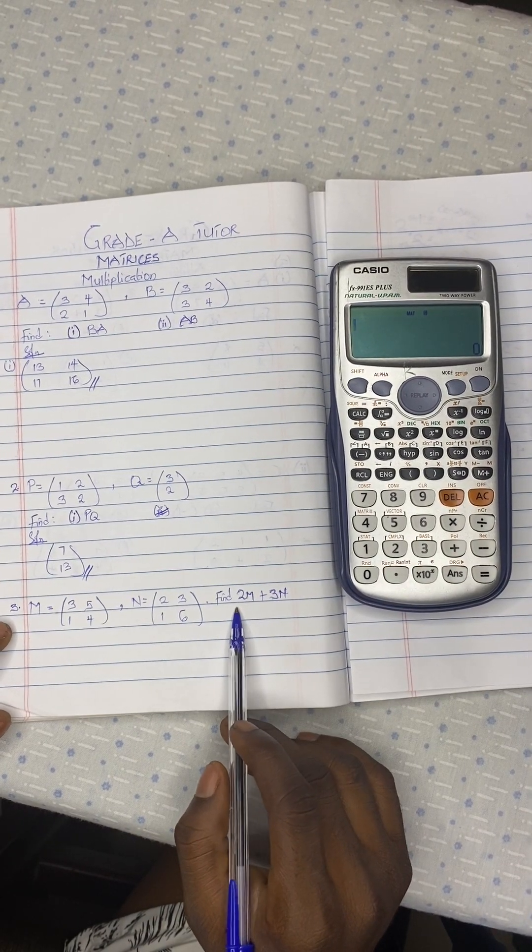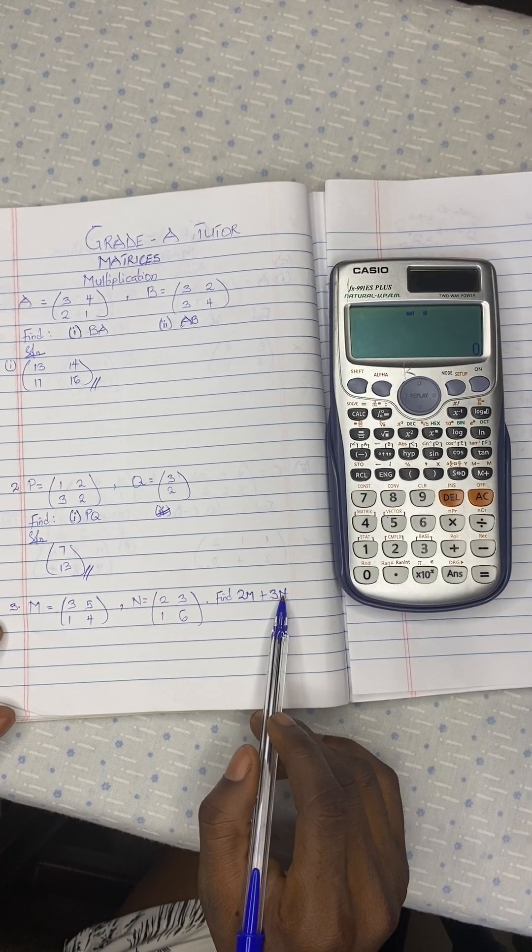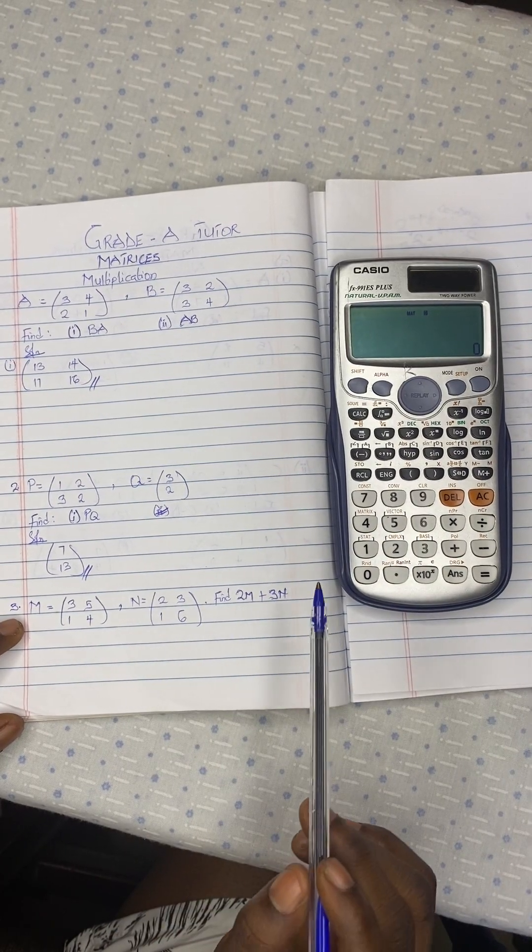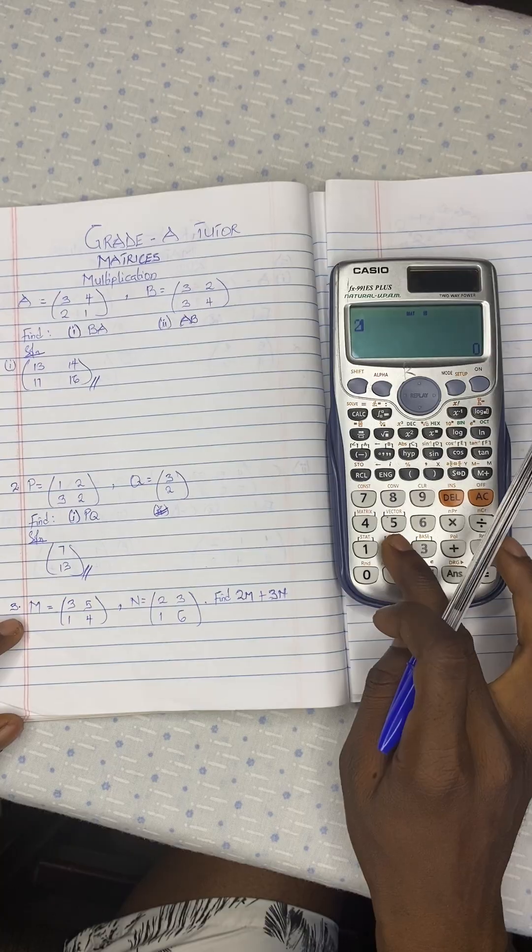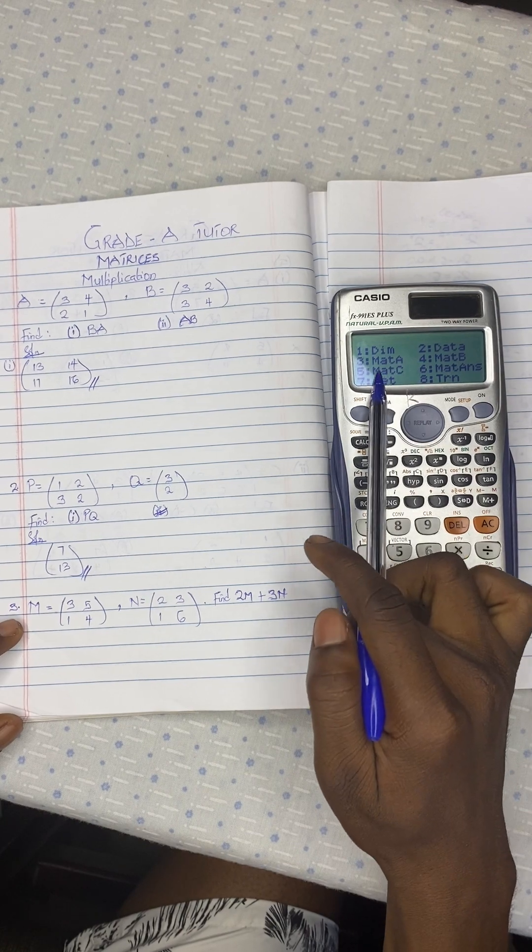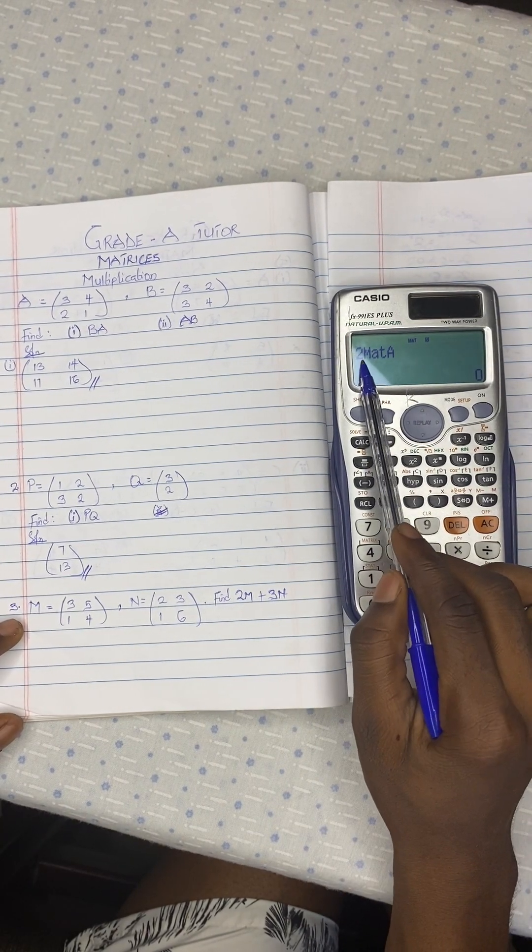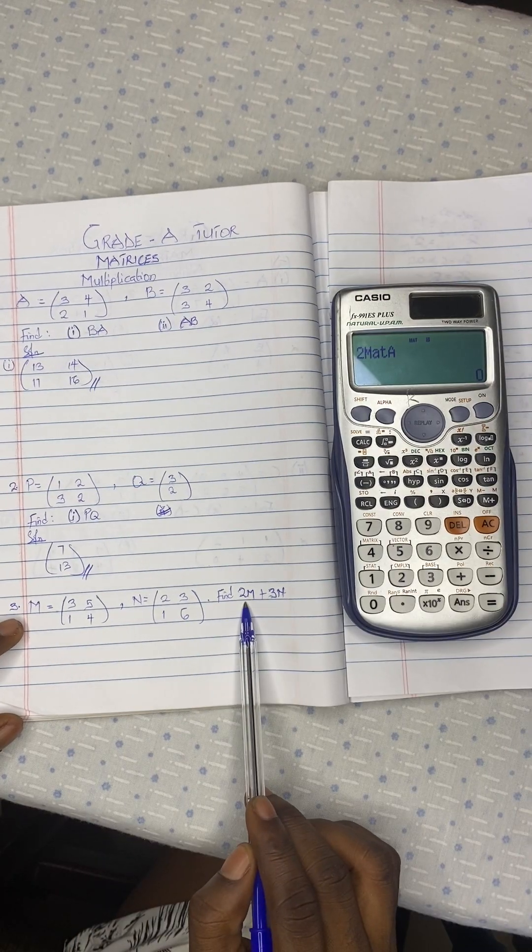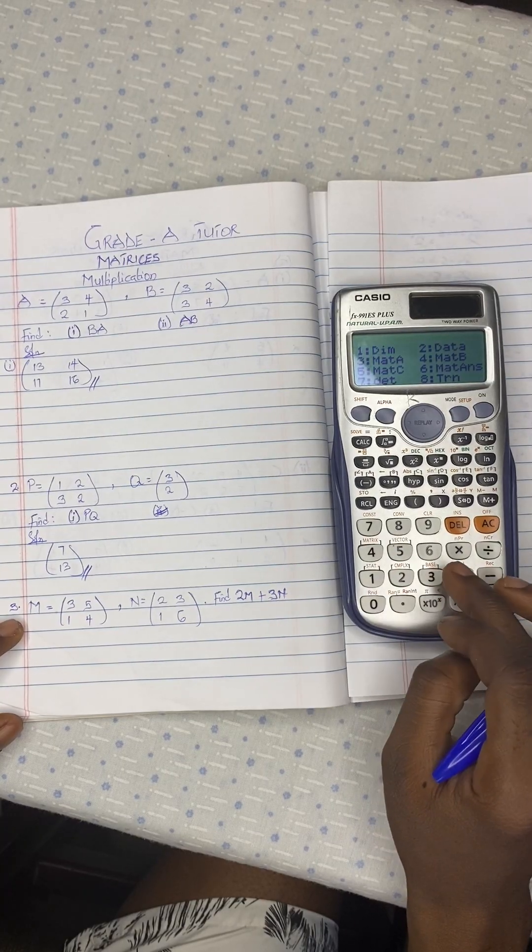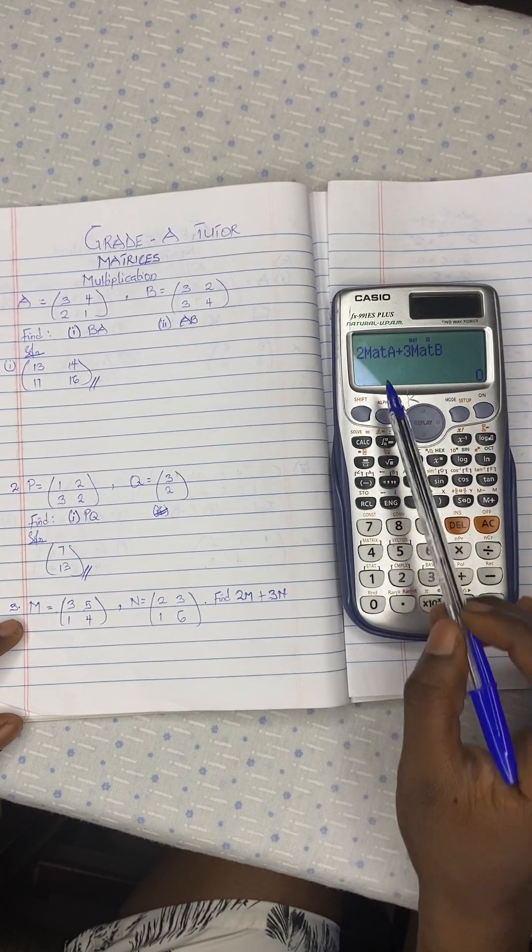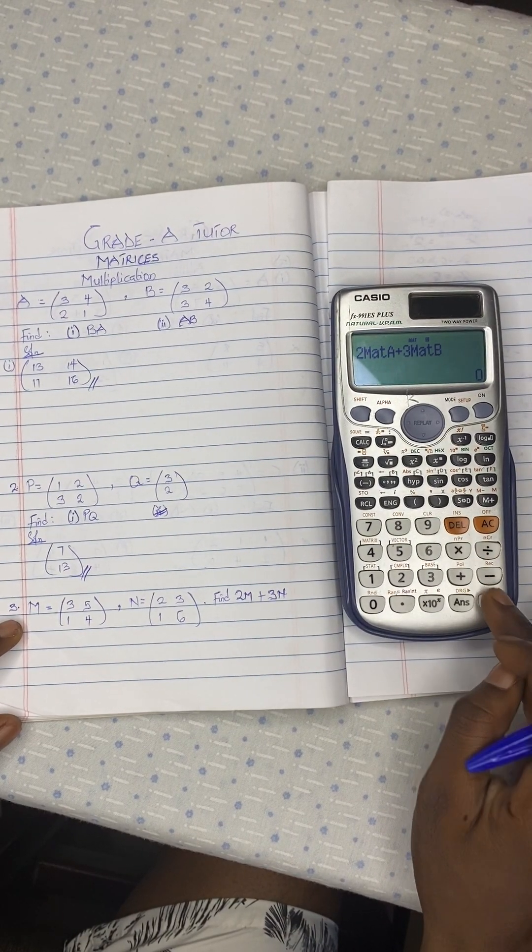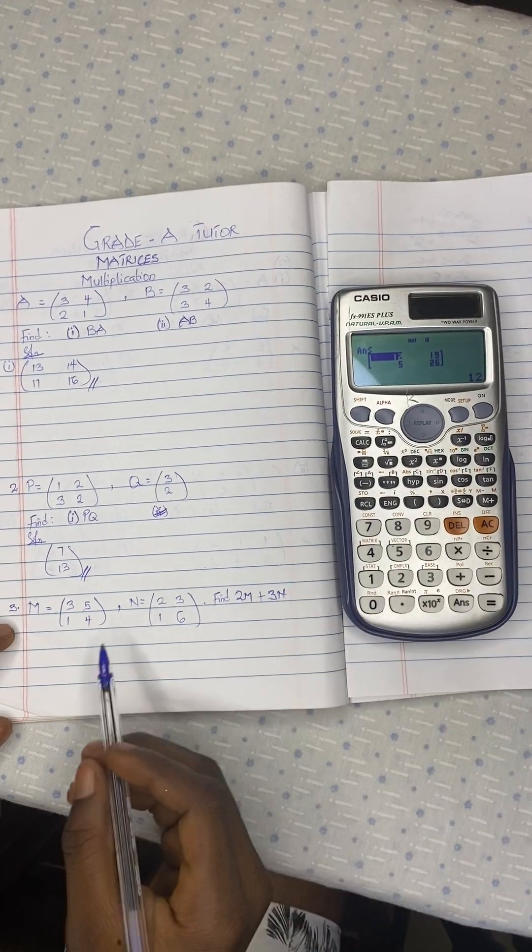So now they're asking you to calculate for 2M plus 3N. So you know M is in matrix A and N is in matrix B. So you press on 2. Then you bring the matrix A. So shift 4, matrix A. So you see it is 2 matrix A, so it's the same as 2M. Plus 3, then you bring matrix B. So it's 2M plus 3N. Then you press on equal to. There's your final answer.